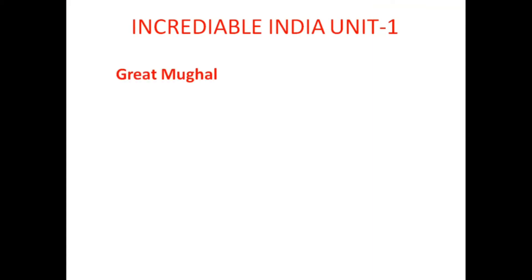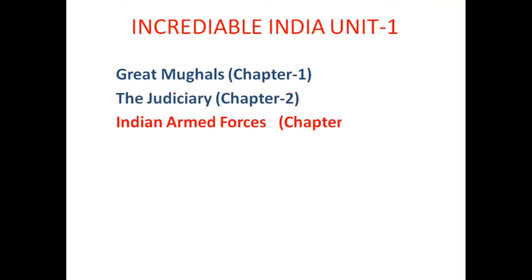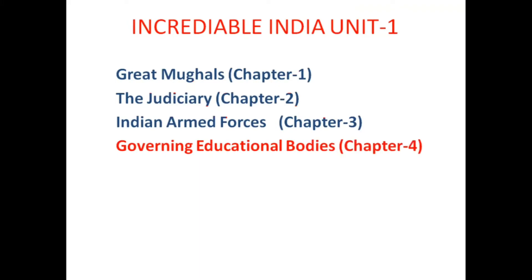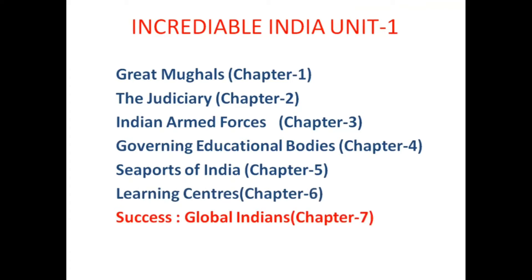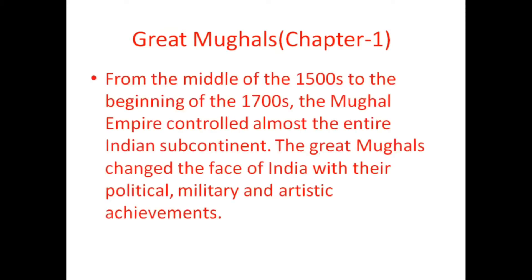The first chapter is Great Moguls, the second chapter is The Judiciary, the third chapter is Indian Armed Forces, the fourth chapter is Governing Educational Bodies, the fifth chapter is Secrets of India, the sixth chapter is Learning Centers, and the seventh chapter is Success of Global Indians. Let us look at Chapter One: Great Moguls.